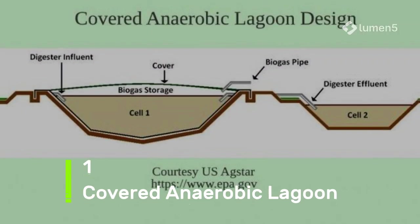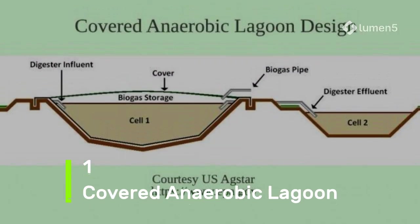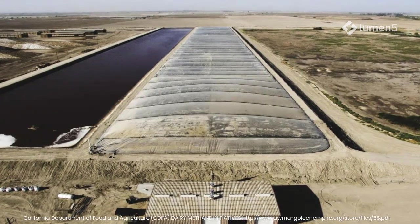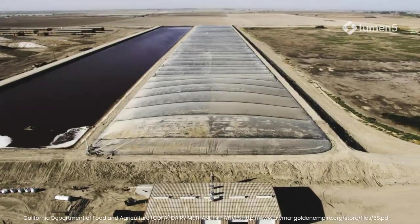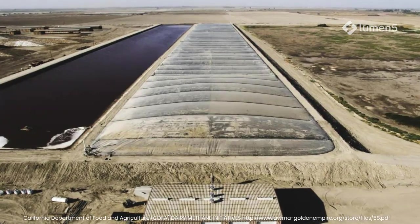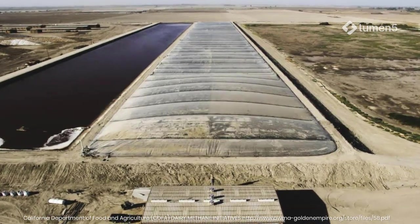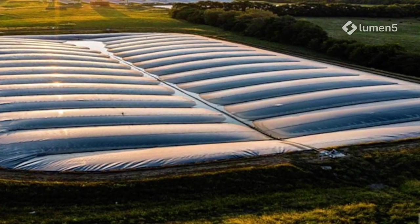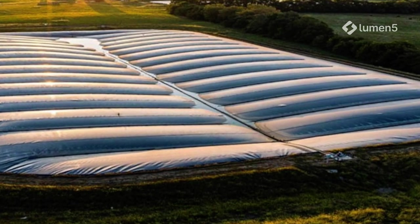Type 1: Covered anaerobic lagoon. Popular on large U.S. dairy farms, these use a flexible cover to trap methane. They are not heated, so biogas output in winter can be very low.